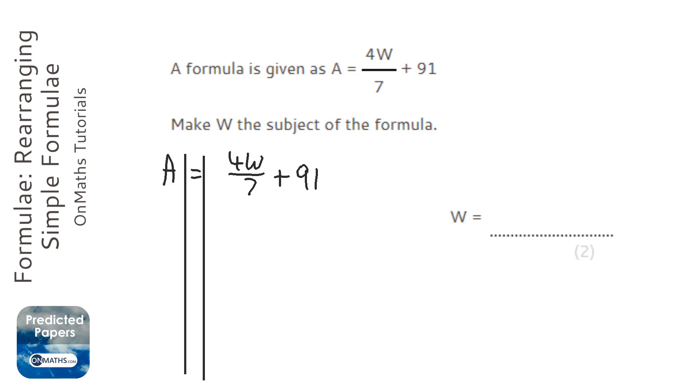So the first thing I'm going to do, well, we could times all three terms by 7, but students often forget to times all three terms by 7. So we're going to focus on the 91 and we're going to take away 91 from both sides. That leaves us with A minus 91 on the left-hand side, and then this fraction on the right-hand side.